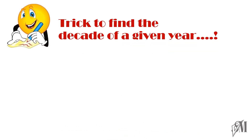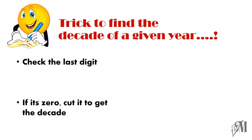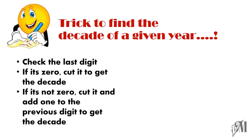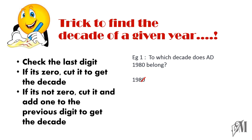Now let me tell you a trick to find the decade of a given year. Check the last digit of the given year. If it is a zero, cut it and get the decade from the remaining digits. For example, AD 1980 has a last digit of zero, so we cut it and the remaining digits 198 tell us it belongs to the 198th decade.